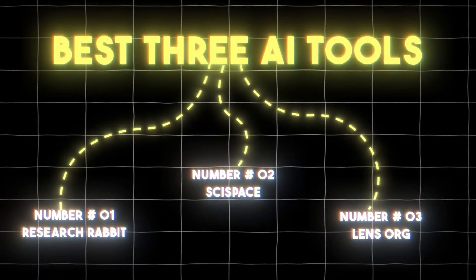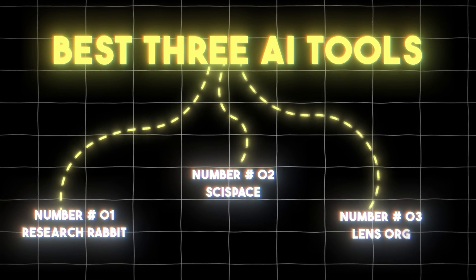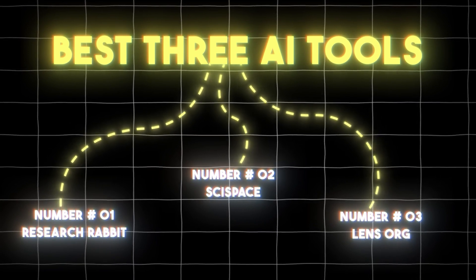I hope this video was useful. To sum up: we have Research Rabbit for literature mapping, SciSpace for your literature review, and Lens.org for your literature search. These three tools are more than enough for your entire literature review process, and they're the only three I use really regularly during my work — I can swear by their quality.